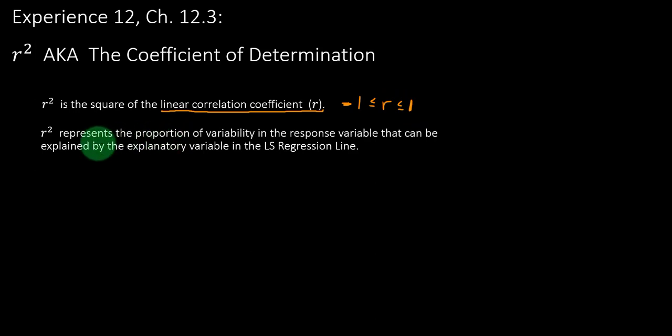The r squared value is just a square of whatever r is, but what it accounts for is the amount of variability in the response variable that can be attributed to or accounted for by the explanatory variable.